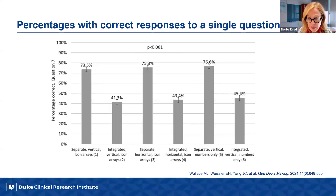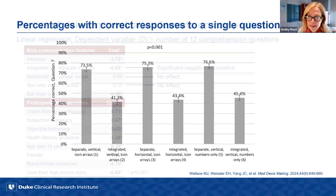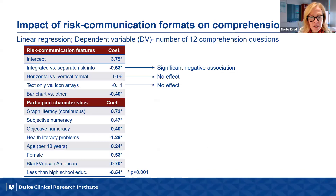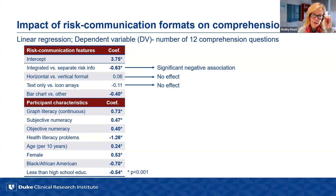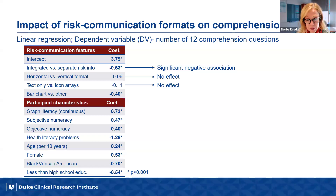We did simple linear regression to evaluate factors contributing to higher and lower performance on the comprehension questions. We found that integrated risk information performed more poorly. There was not a significant difference between horizontal and vertical formats for the time element. There was also not a difference between text-only versus inclusion of icon arrays. The bar chart performed more poorly on average. We also found a host of other participant characteristics significantly associated with performance on the comprehension questions.